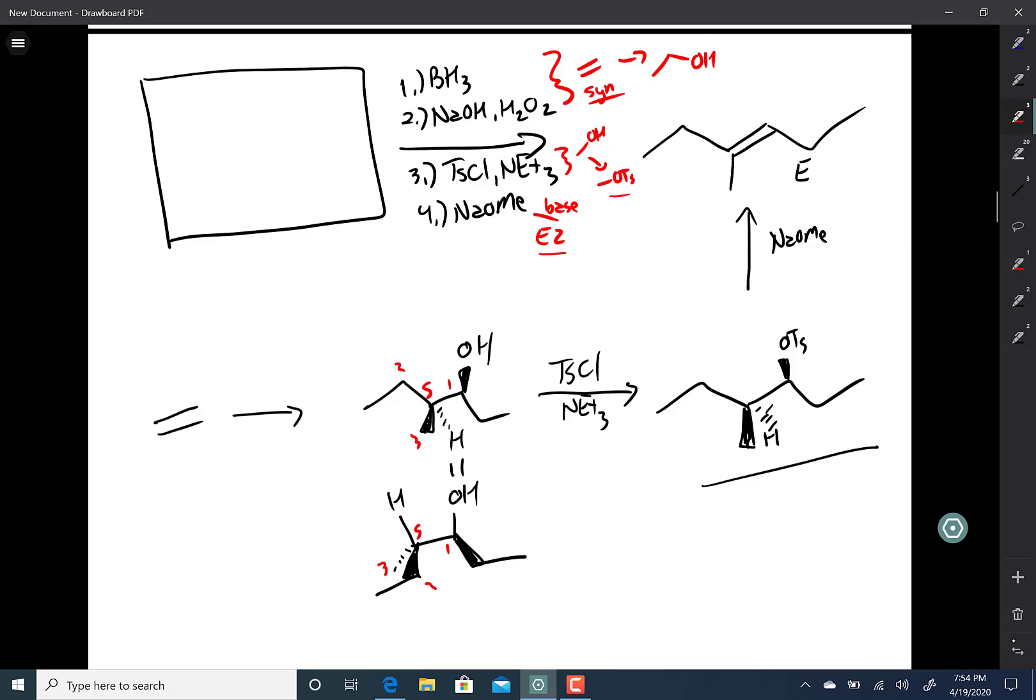Now it's pretty straightforward to go backwards from here because you just remember that wedges are cis to each other, dashes are cis to each other. So here, when we draw our alkene, our two wedges end up cis to each other, so right there and there. And the methyl group being a dash ends up trans to the wedge, making it there.